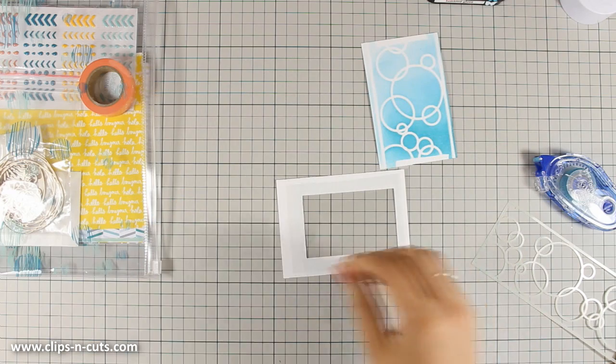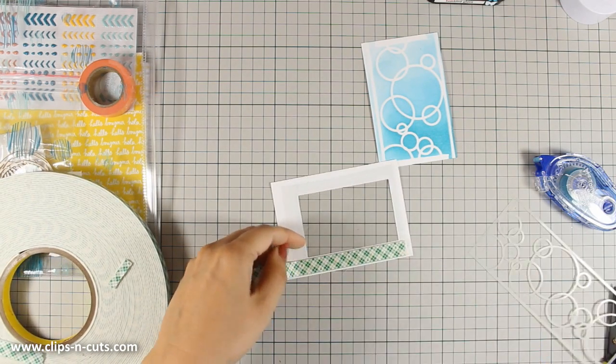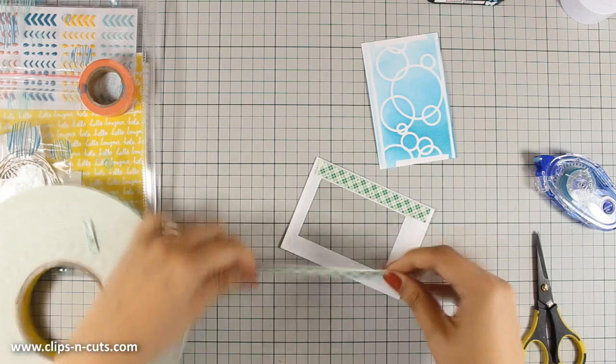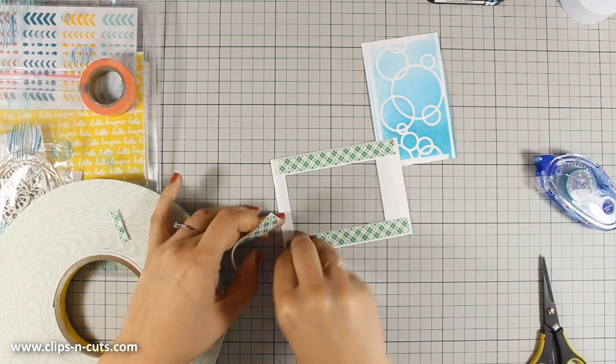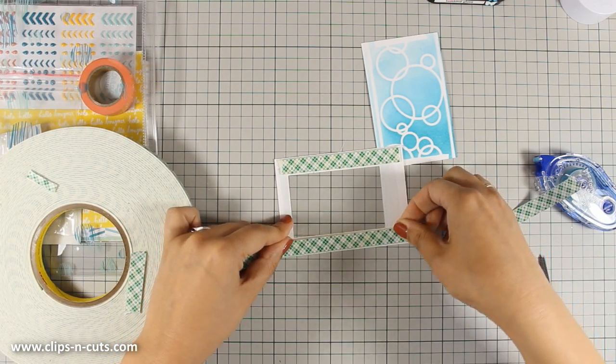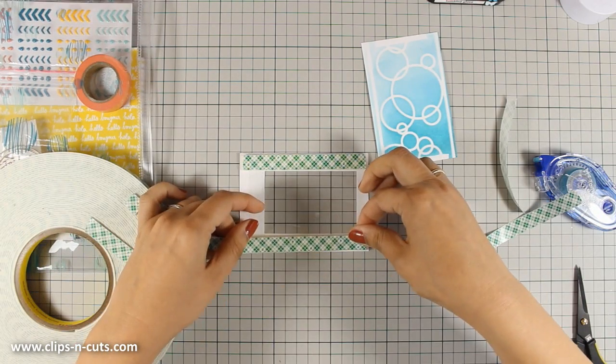Now all I have to do is to use my foam tape and create a wall all around that window. This will ensure that all the bits and pieces that I am going to put inside my shaker card are not going to go anywhere. I am also going to double up the tape adhesive just to make sure that my sequins do have enough space to move around.